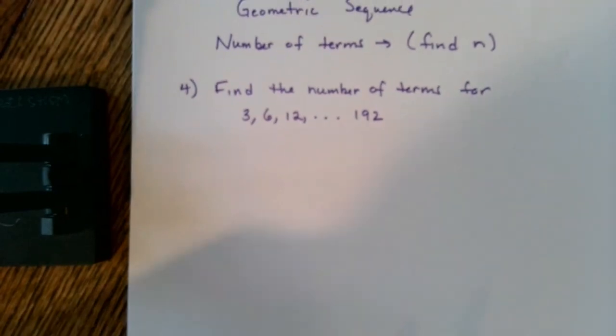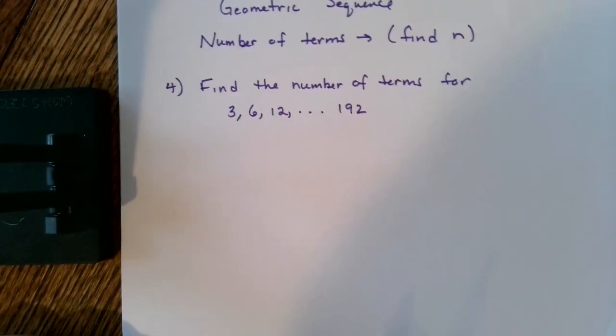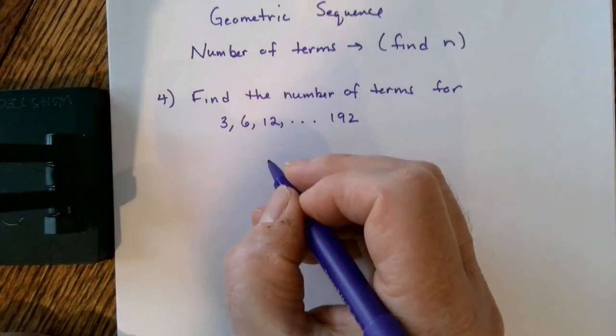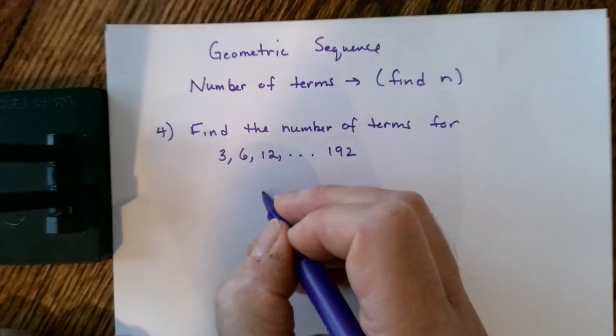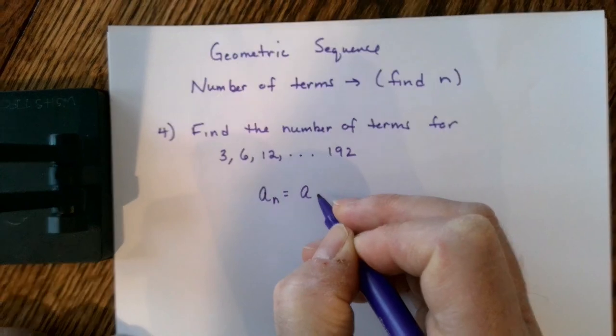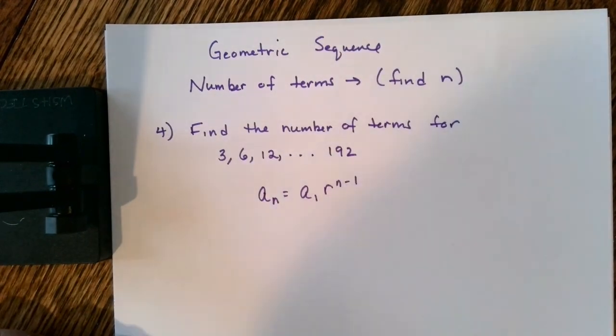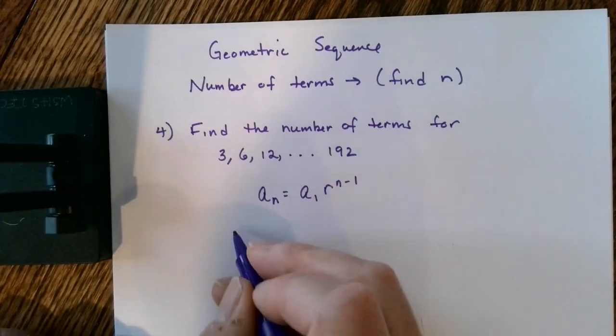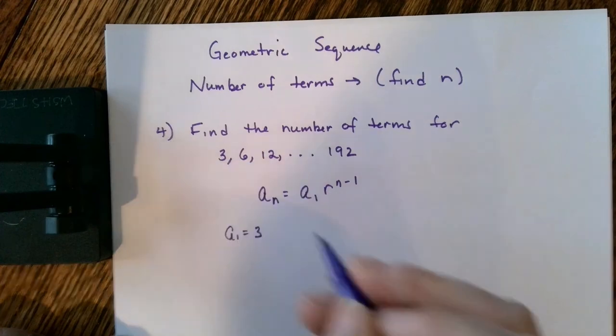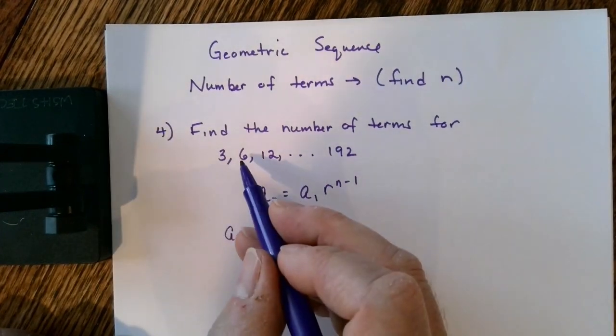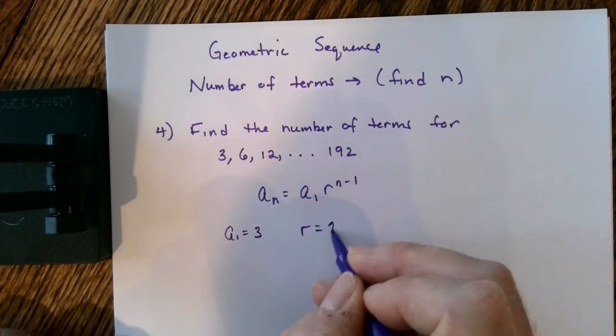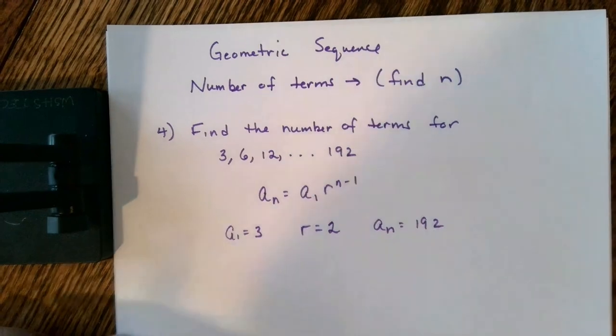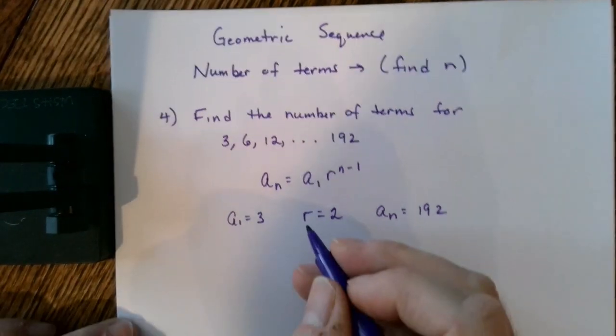What's the last thing that we could do? Is we could find the number of terms for your problem, meaning what is your n value. Once again, if I know it's geometric, which I've been told in the problem, I can use the formula a sub n is equal to the first term times r to the n minus 1. And so therefore, what information do I know? I know that my first term is 3. It's given in the problem. My r value, as you can see through inspection, 6 divided by 3 is 2. 12 divided by 6 is 2, so my r value is 2. And I also know my a sub n value, which is 192.